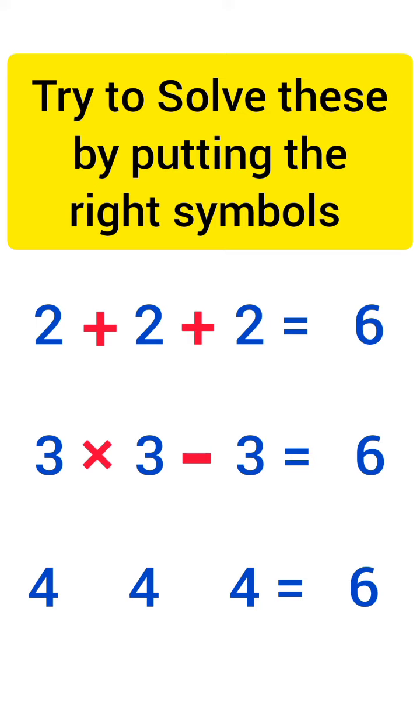Now try to solve the last one. We will put the square root before every 4. Then we will put the plus sign. That means square root of 4 plus square root of 4 plus square root of 4 equals 6.